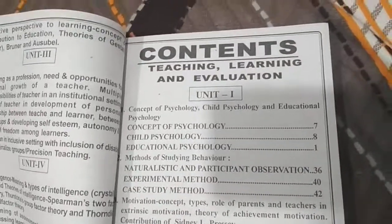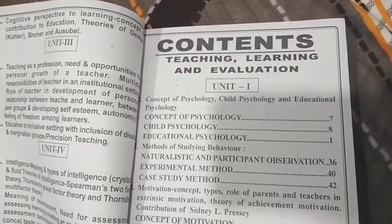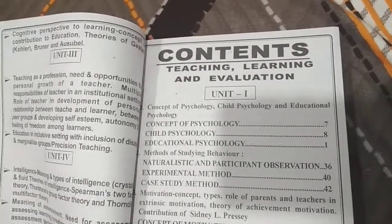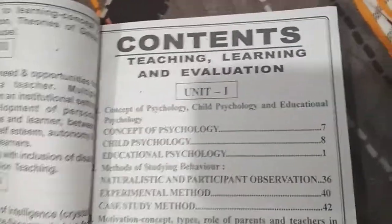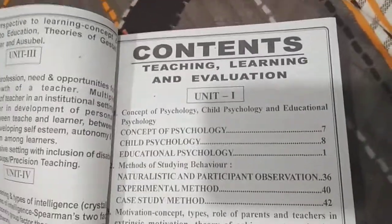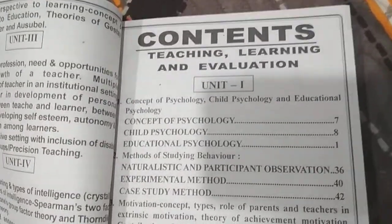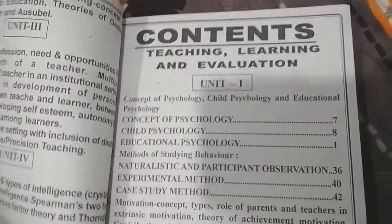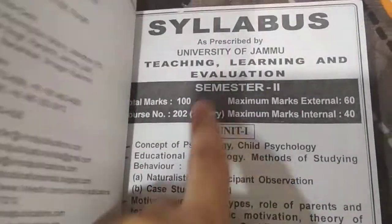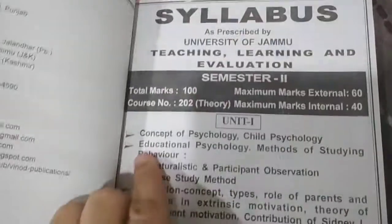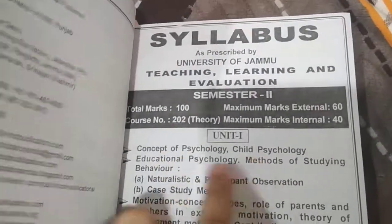Now after that, contents are mentioned. You can check the contents against the syllabus and match whether the contents have everything which was there in the syllabus or not. For example, in Unit 1, the first topic which has been started is Concept of Psychology, Child Psychology, Educational Psychology. And in the syllabus also, the first topic was Concept of Psychology, Child Psychology, Educational Psychology.